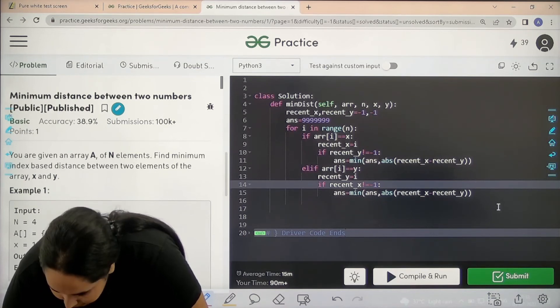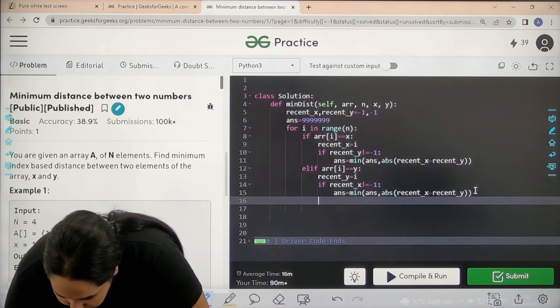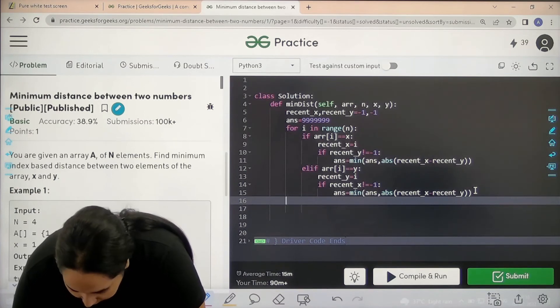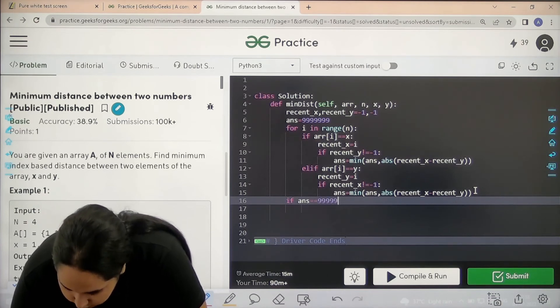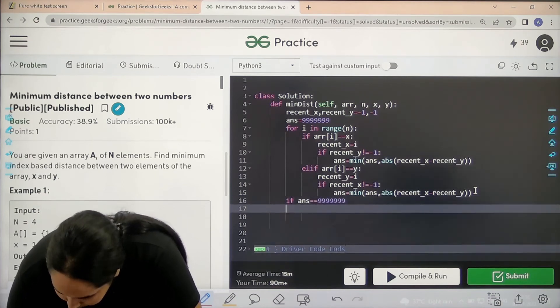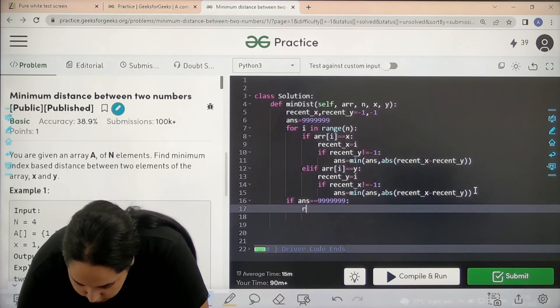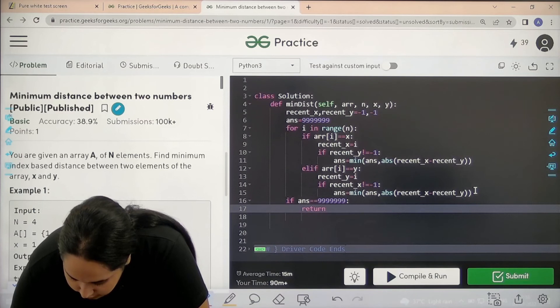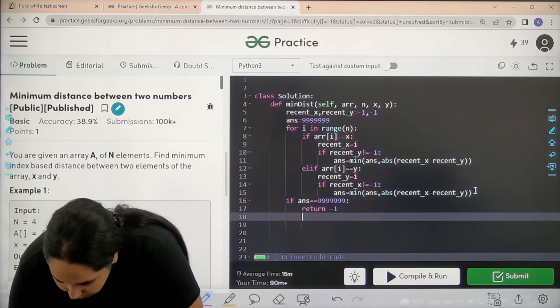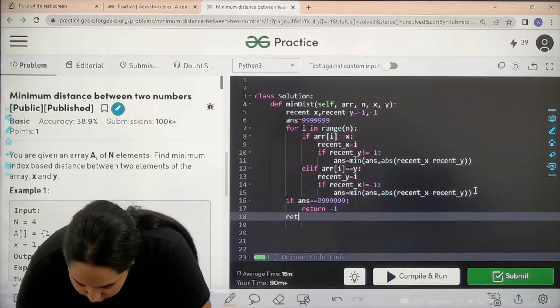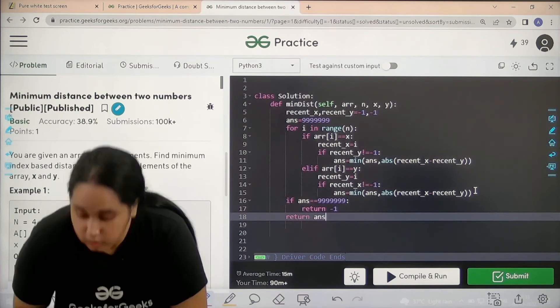If answer equals the large initial value, return -1. Otherwise, you can just return the answer. Now I need to check if this solution is correct or not, so I will click on compile and run.